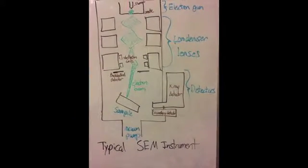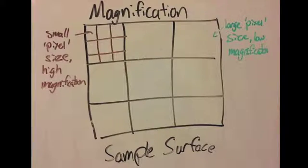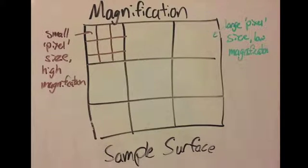During the scan, the deflection coils focus the beam at a single spot for a brief moment as it moves along the surface. Each spot of focus is a pixel in the image, and because there is a fixed number of pixels in every image the SEM takes, the magnification of the image is controlled by how much the beam moves when it takes each pixel.